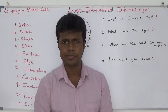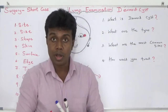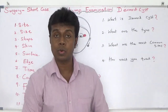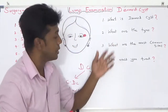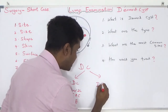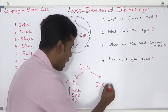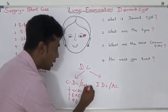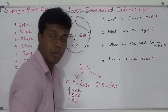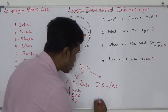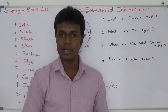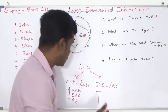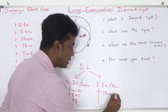The second type is the implanted dermoid cyst. Due to some trauma, skin can be implanted into deeper subcutaneous tissue, giving rise to an implanted or acquired dermoid cyst. The most common areas are the hand, lower limb, sole, and palm, as these are areas most likely to be traumatized.